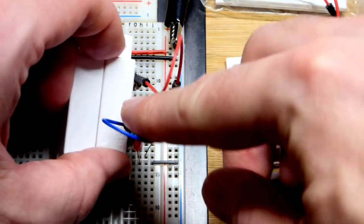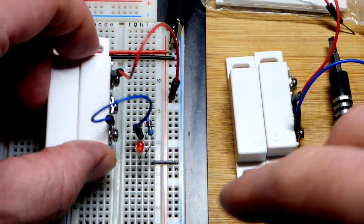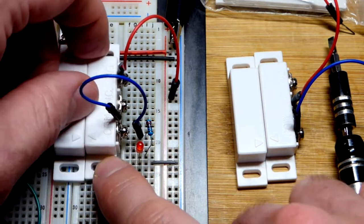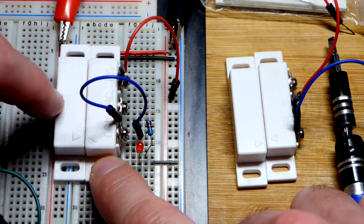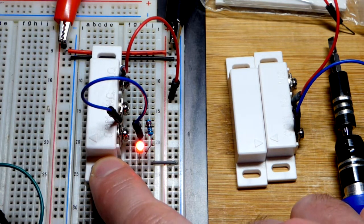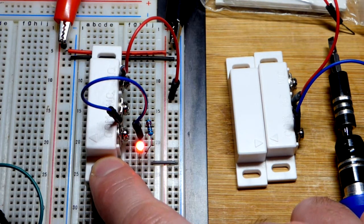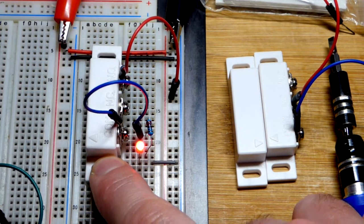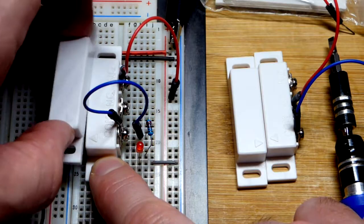So this is the normally open setting right there, and the LED is off. So we could screw this down to a door frame or whatnot, and the magnet to the door. And when the door opens, then now we're not in the normal position anymore. So the normally open switch closed and the LED is on. Pretty straightforward right there.